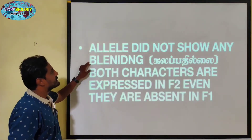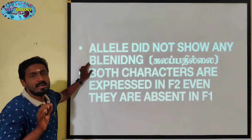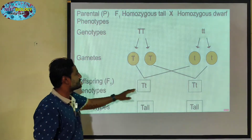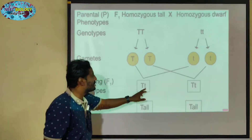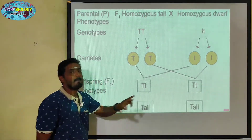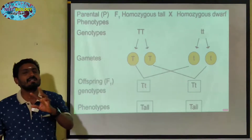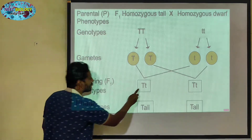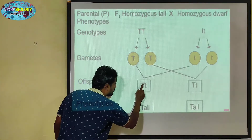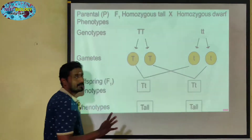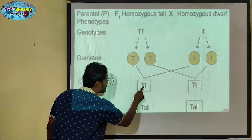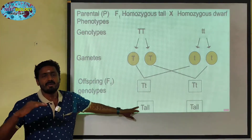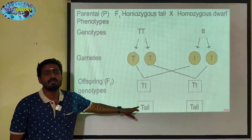Alleles did not show any blending. For example, in this case there are two alleles. When Capital T and small t are mixed together, there is no medium or blended plant produced.